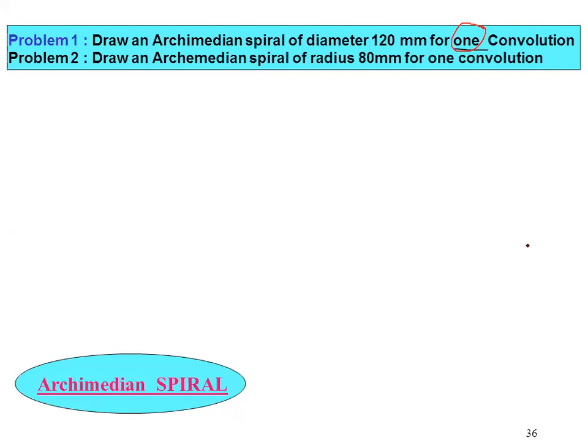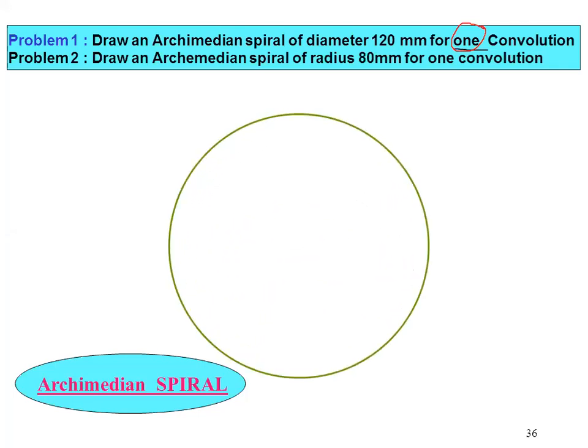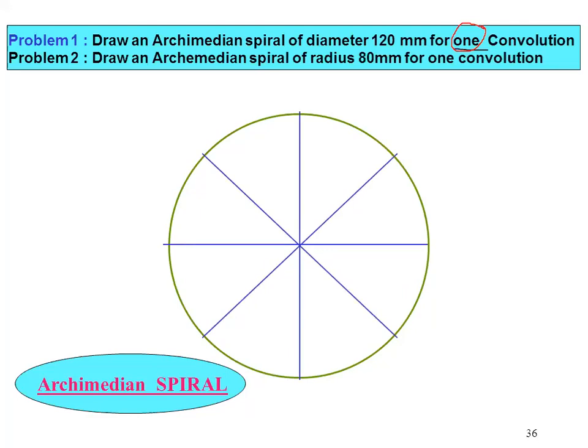I will let you know what exactly one and a half convolution or two convolutions are. Now, how to draw this Archimedes spiral? We will see first, and later on we will see what is its application and where it is being used. So first, what you are going to draw — you are going to draw the circle which is of diameter 120. Then you will divide this circle into eight equal parts.